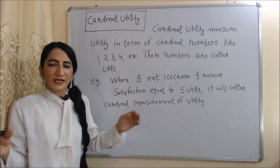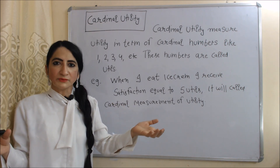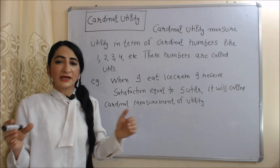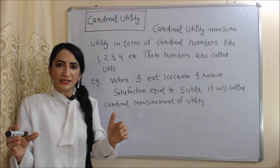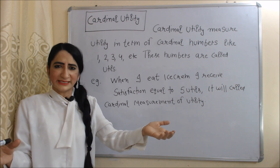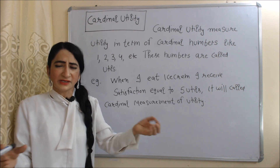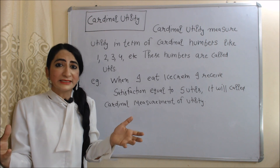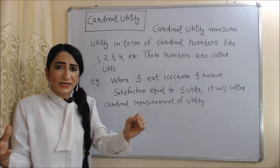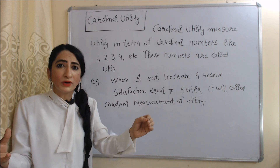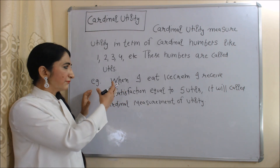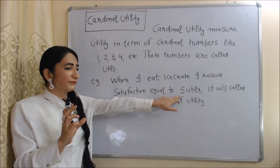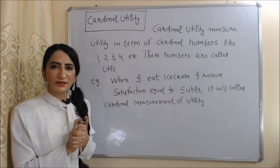What is cardinal utility? Cardinal utility measures utility in terms of numbers like 1, 2, 3, 4, etc., and these numbers are called utils. Whenever we buy anything, we get some happiness, satisfaction, or utility. When we measure our utility in terms of numbers, it will be called cardinal measurement of utility. For example, when I eat ice cream, I receive satisfaction equal to 5 utils — that is called cardinal measurement of utility.